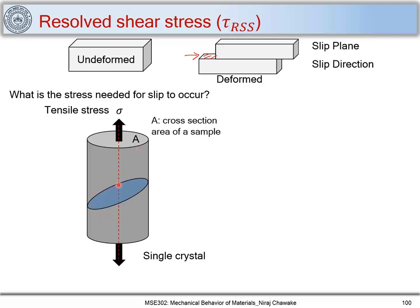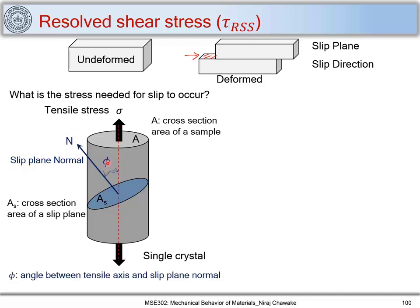Let us mark a slip plane with cross-sectional area A_s, and define this slip plane using its normal N, which makes an angle phi with respect to the tensile axis. Let's also mark a slip direction D which makes an angle lambda with respect to the tensile axis. So the slip normal makes angle phi and the slip direction makes angle lambda with the tensile axis.